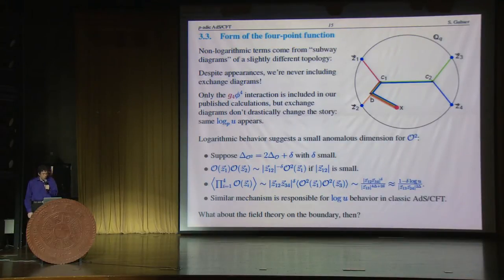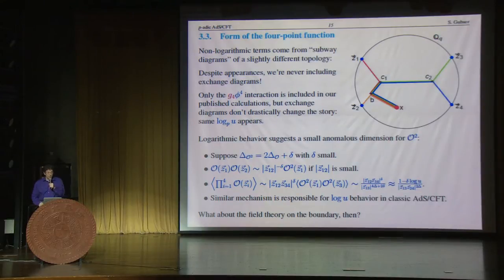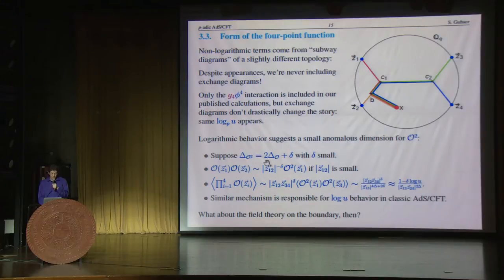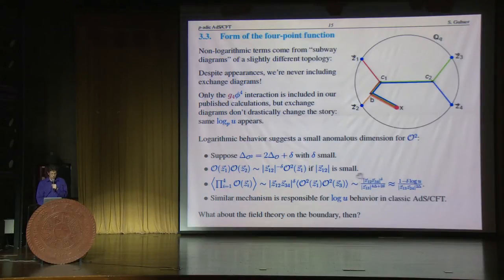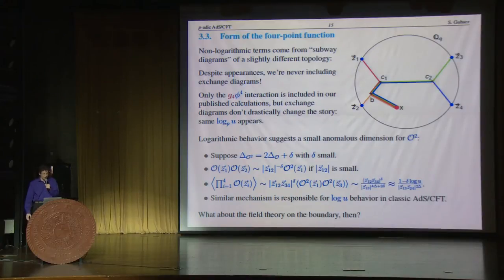This subway diagram — as we like to call it, since it looks like a subway system — allows us to shift X all over the p-adic tree. As we shift it as far as it will go along this central leg, there are log U equivalent locations for B, and that's where this log U comes from. The log also suggests some kind of anomalous dimensions in the dual field theory. There is an operator O-squared whose dimension is slightly different from the dimension of O, and if you use an OPE to develop this four-point function of O, you naturally get the desired logarithm — a similar mechanism is responsible for log U behavior in classic AdS-CFT.